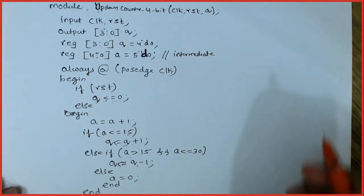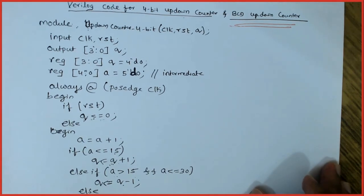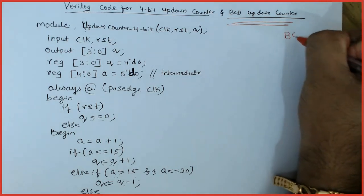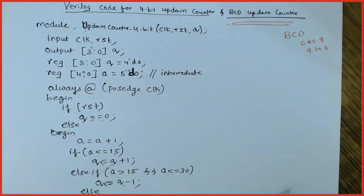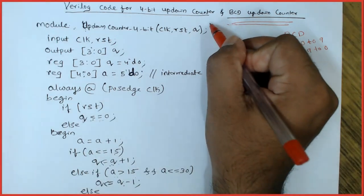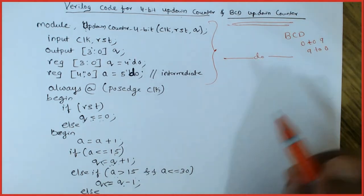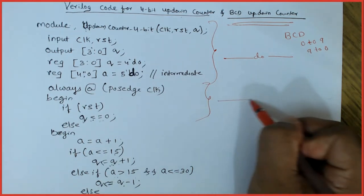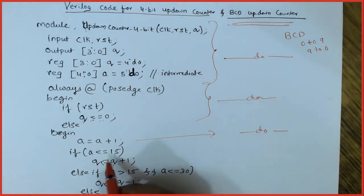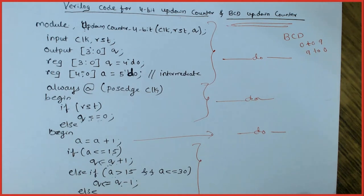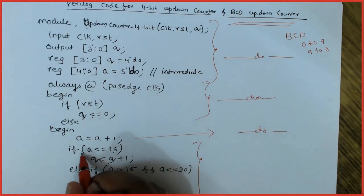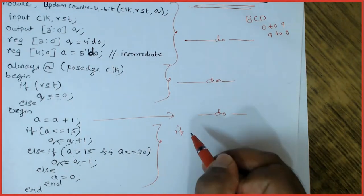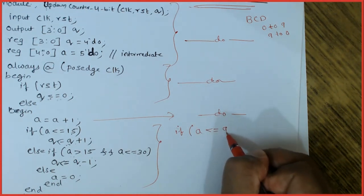Now for the 4-bit BCD up-down counter. BCD means counting from 0 to 9 and then back from 9 to 0. There is not much difference compared to the 4-bit up-down counter code. The module declaration, inputs, outputs, and register declarations are all the same. The change comes in the counting conditions — instead of counting to 15 we only count to 9.